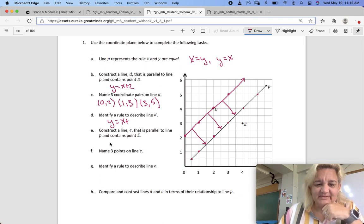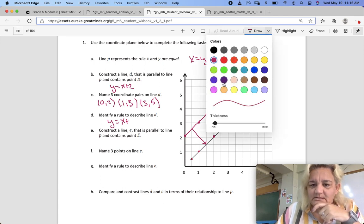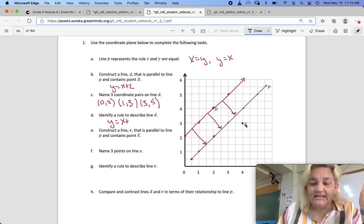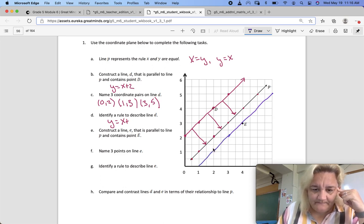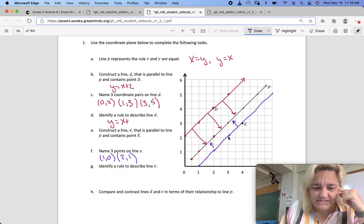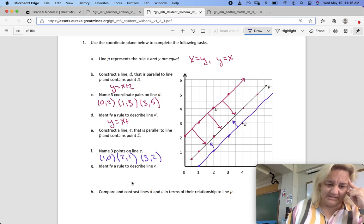Construct a line E that is parallel to P and contains the point E. So now I'm going to switch colors. Let's try purple. And I want it to go through E. This one, we didn't add 2, we subtracted, didn't we? So let's find 3 points on that line. 1, 0, 2, 1, 3, 2. So all of those are one less than our originals.